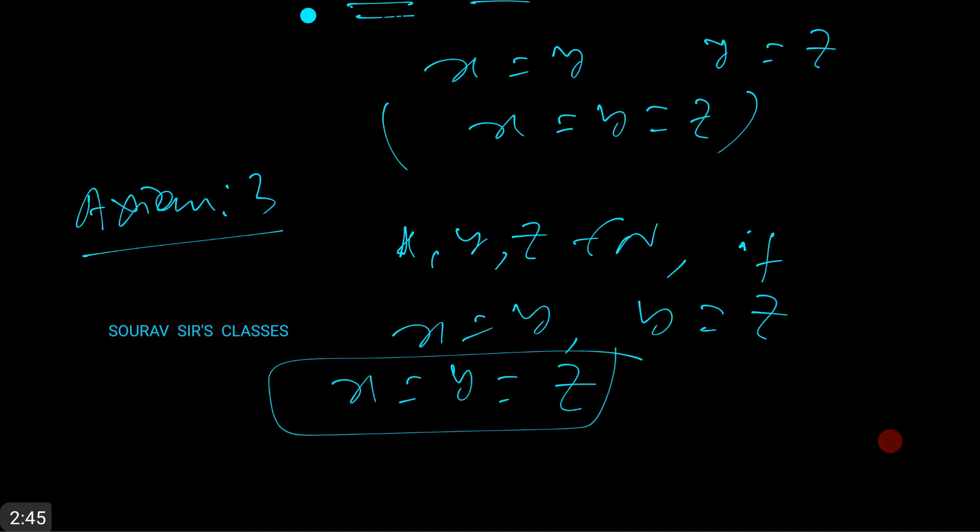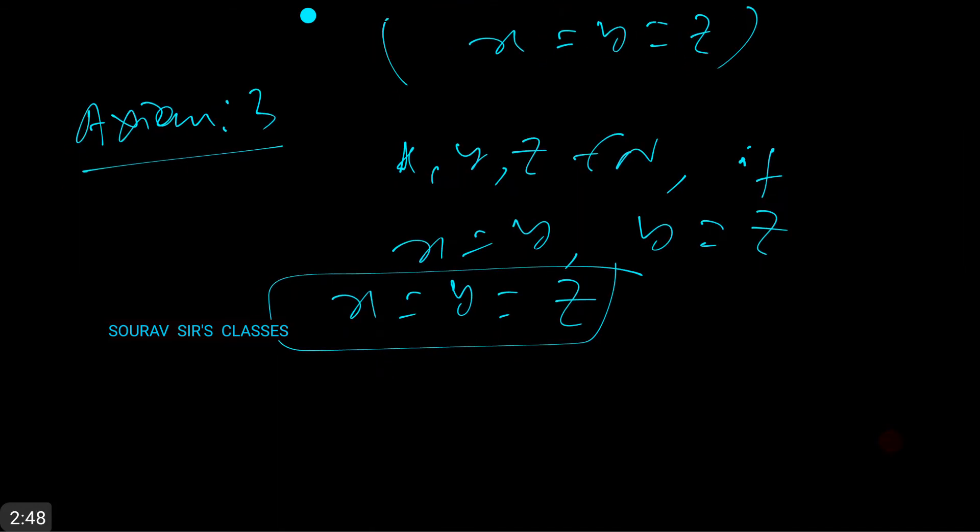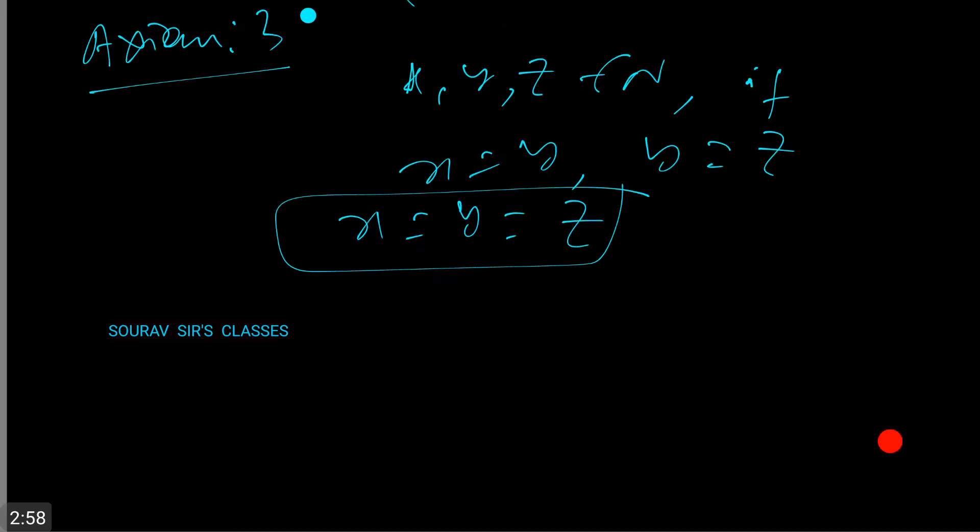The axiom is about: for every x, y, z belongs to natural numbers, if x equal to y and y equal to z, then they are equal. This one is also a very basic axiom. Remember that you have used it in a lot of problems.